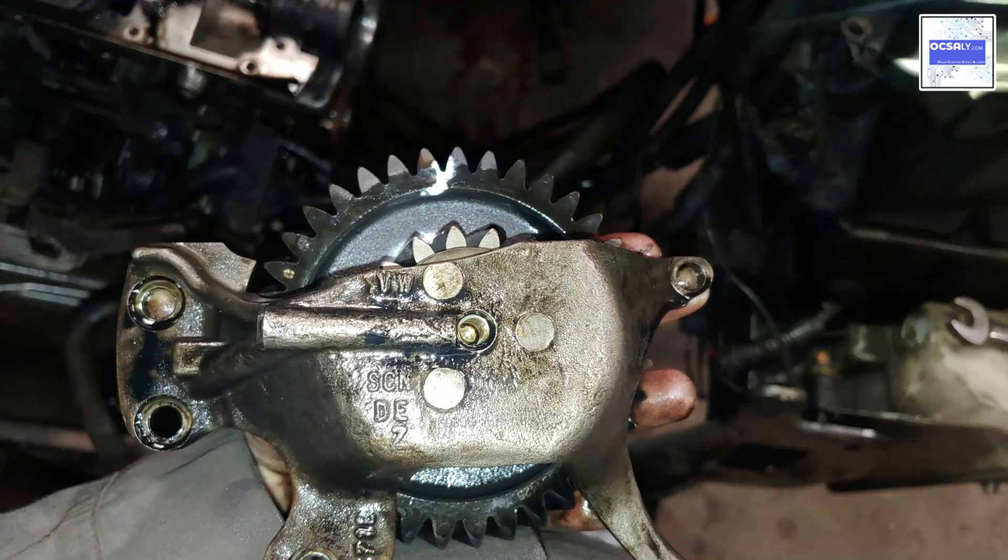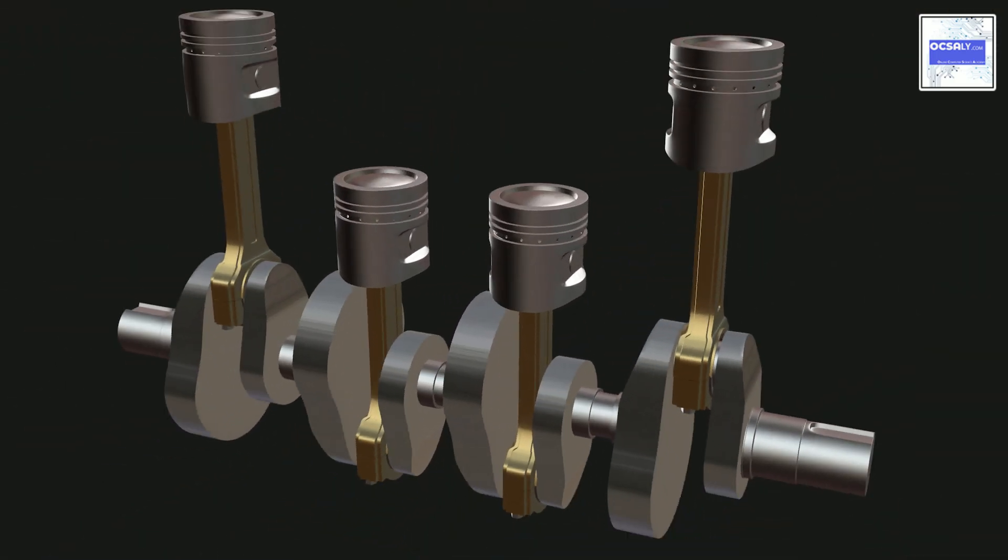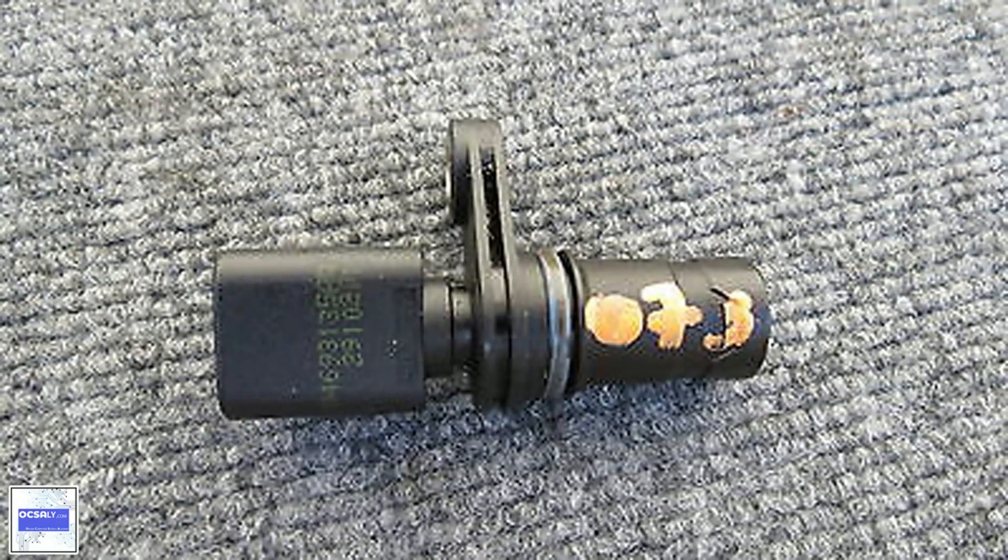Symptoms of a failing crankshaft sensor: A failing sensor can cause intermittent problems. A car may cut out or stall randomly, but then restart with no problems. The engine might have trouble starting in wet weather, but starts okay after.